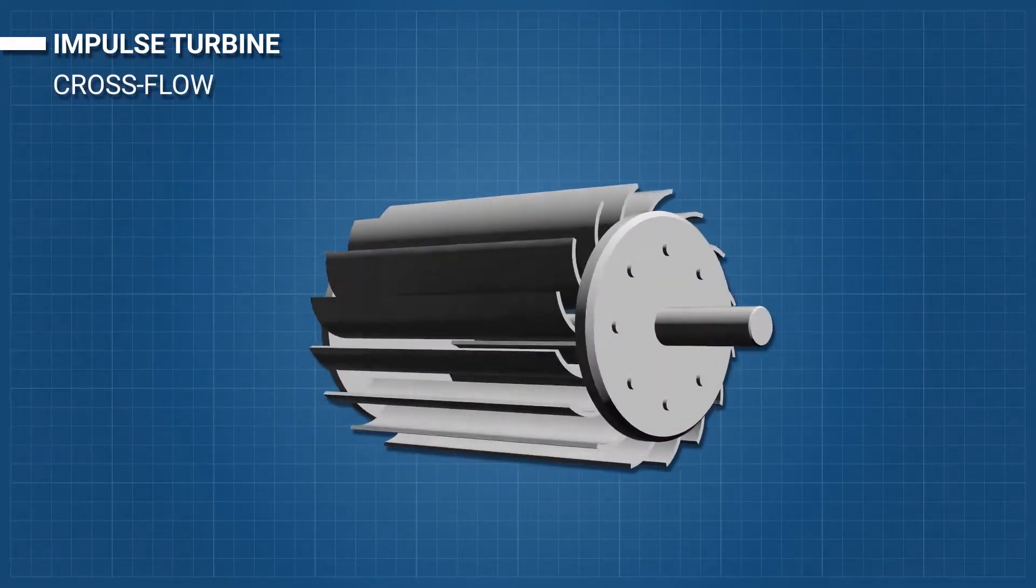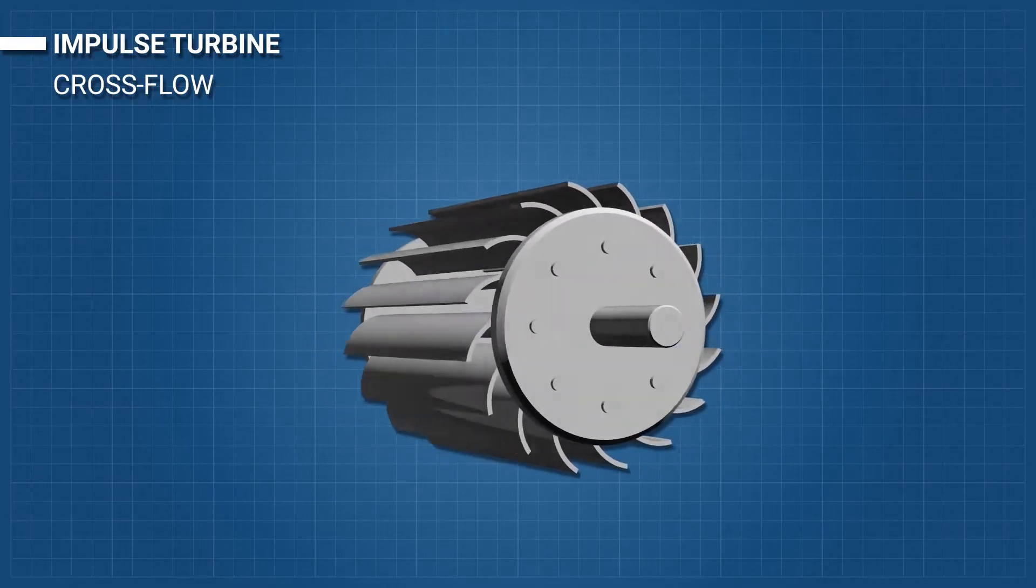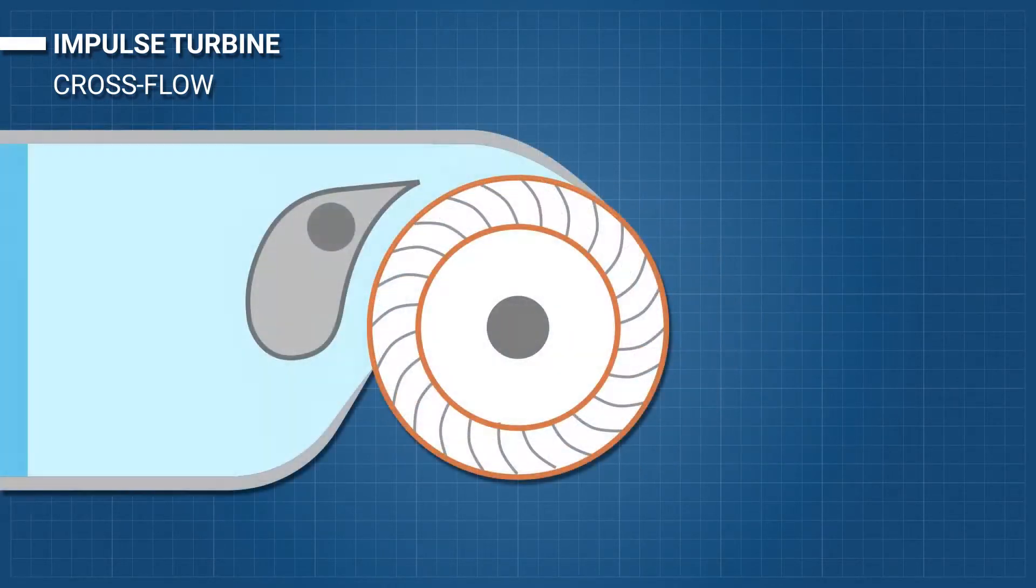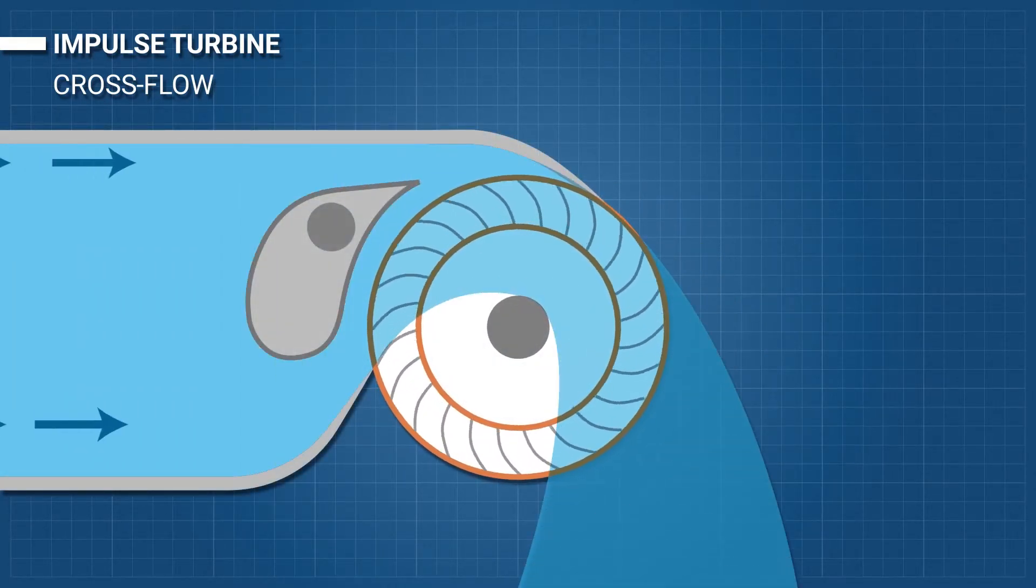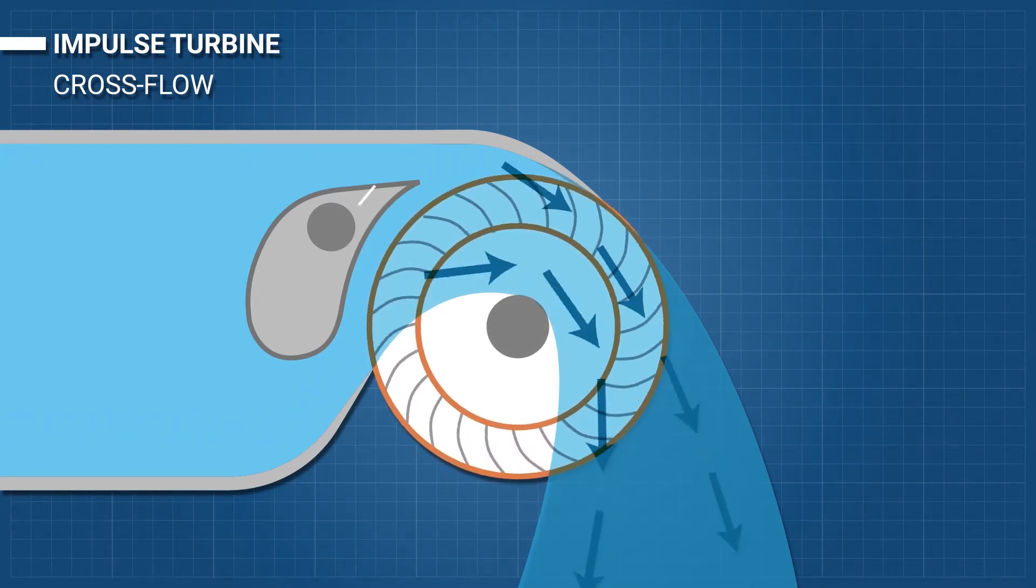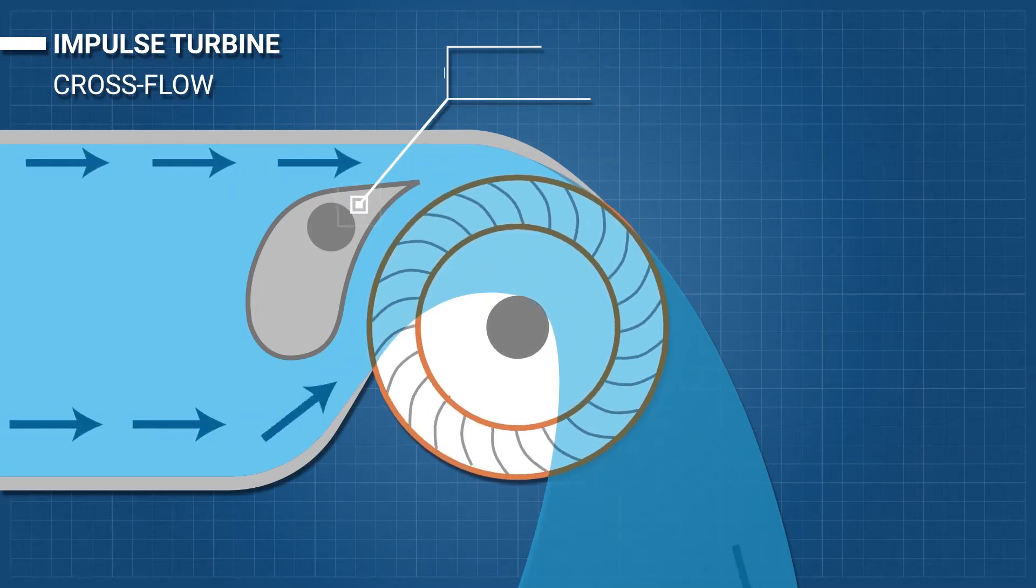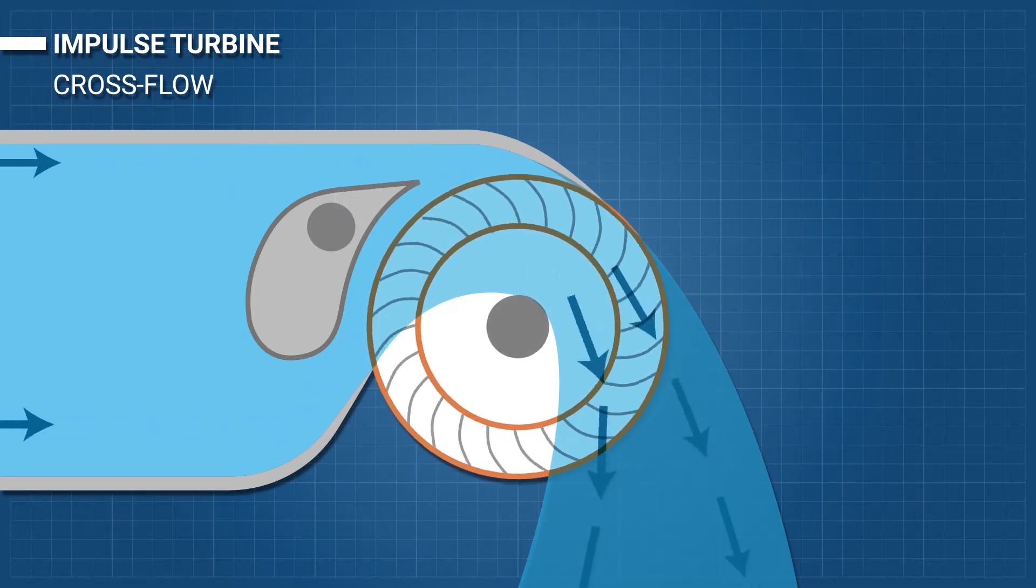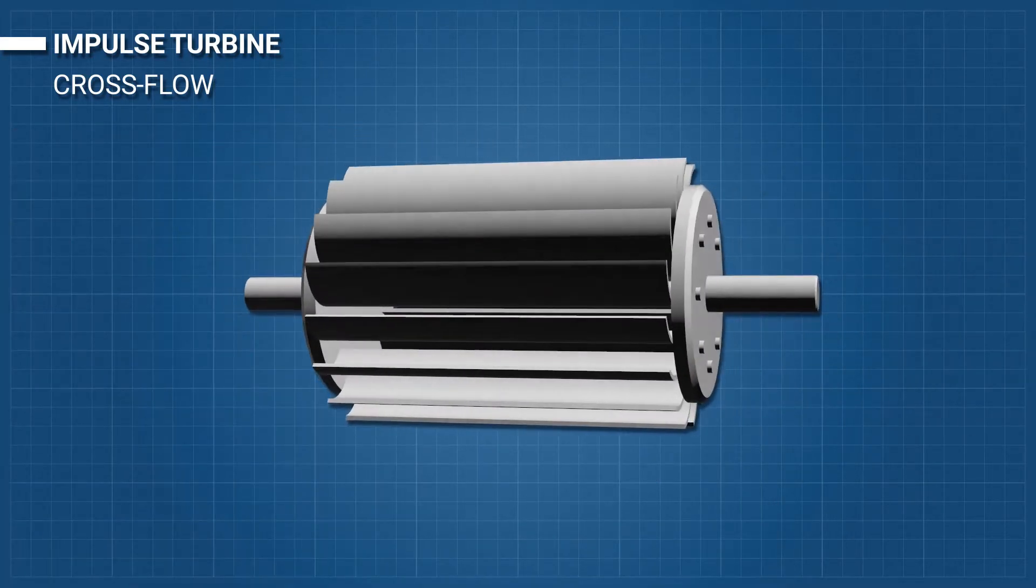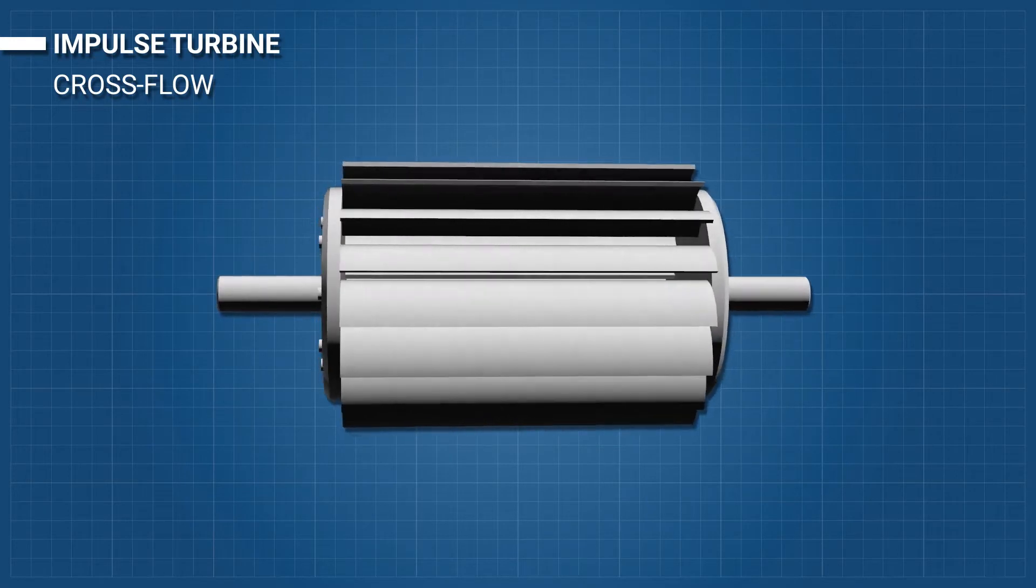Crossflow: It looks like a squirrel cage blower. The crossflow turbine allows the water to flow through the blades twice. The first pass is when the water flows from the outside of the blades to the inside. The second pass is from the inside back out. A guide vane at the entrance to the turbine directs the flow to a limited portion of the runner. The crossflow was developed to accommodate larger water flows and lower heads than the Pelton turbine.